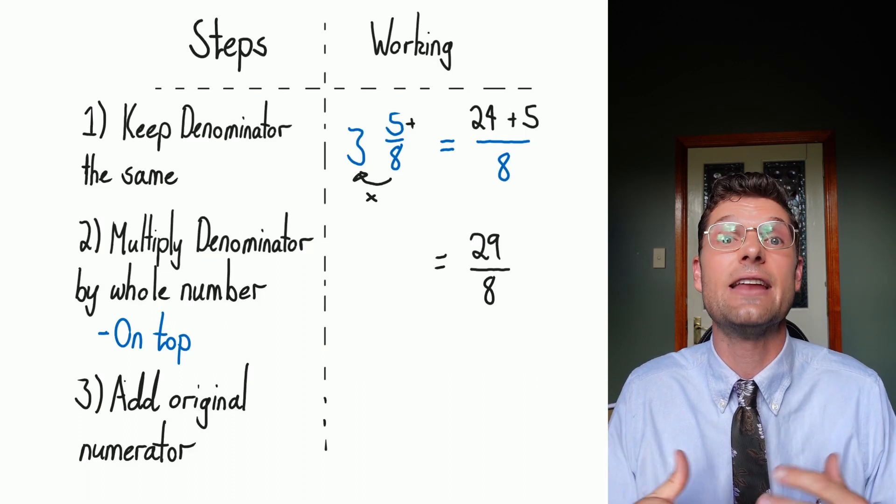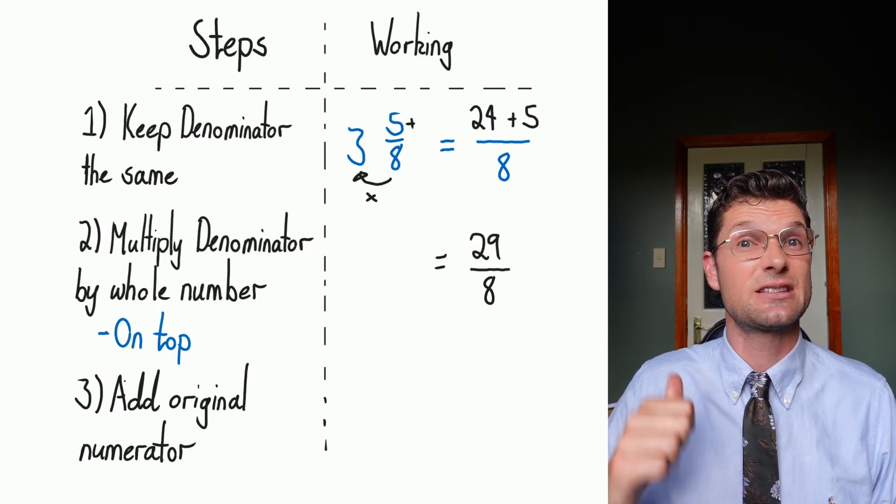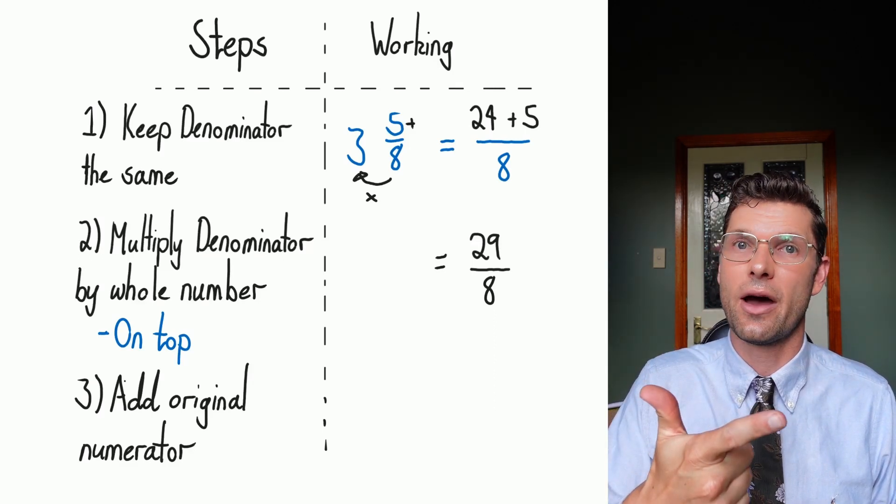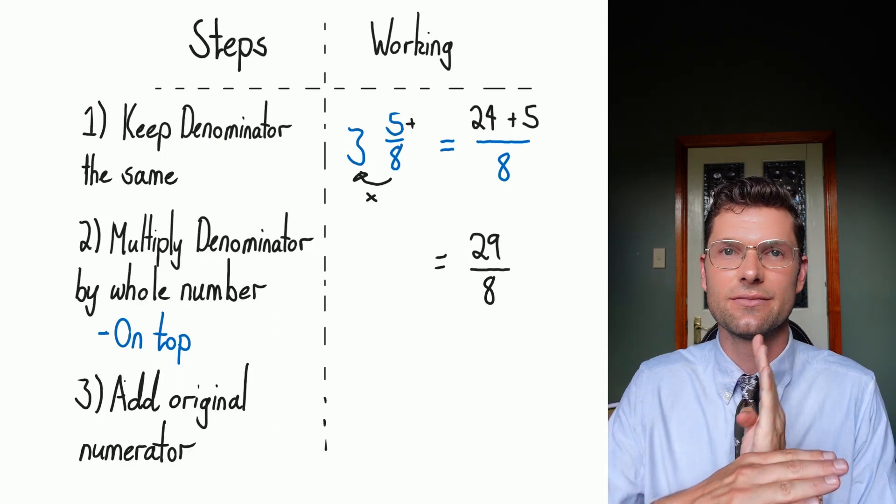I took 29 people and divided them into groups of eight. So just really quickly going through the steps. Denominator the same. Denominator multiplied by the whole number, plus what's left over. So really we're just doing a times and a plus.